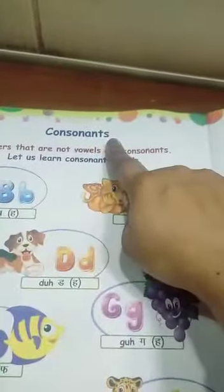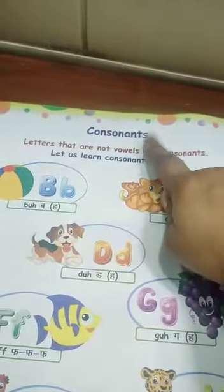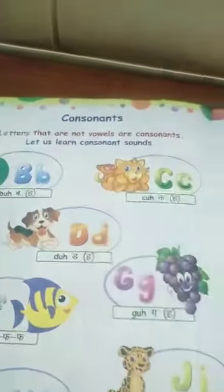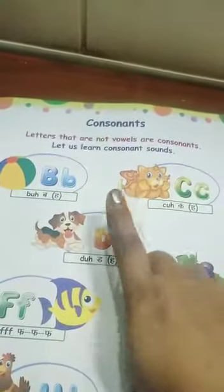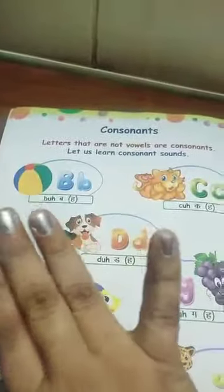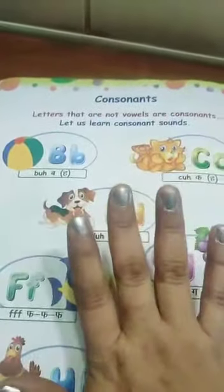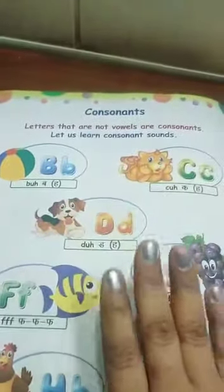The rest of our letters are consonants. Only five are vowels and the rest of the letters are consonants. Except A, E, I, O, U — five are vowels and all others are consonants.